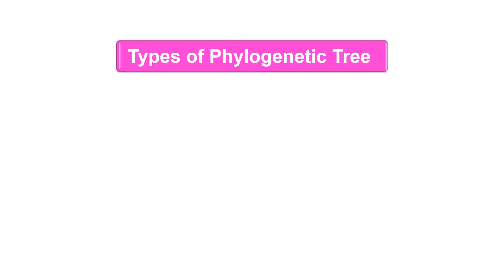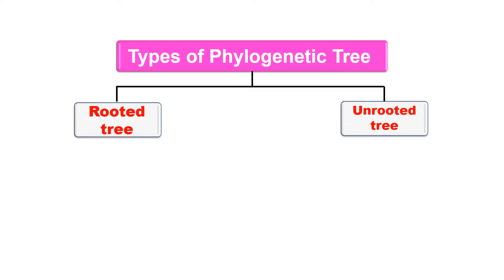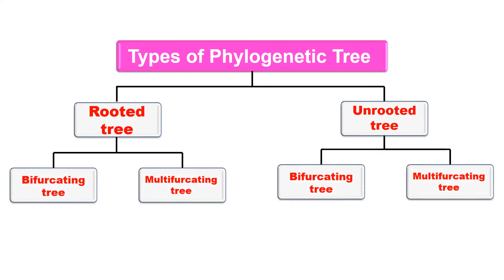Now the types of phylogenetic tree — the phylogenetic tree may be a rooted tree or unrooted tree. The rooted tree is one which has a root from which you can get information about the ancestor, and the unrooted tree does not have any root. These rooted and unrooted trees may further be divided into bifurcating tree and multifurcating tree.